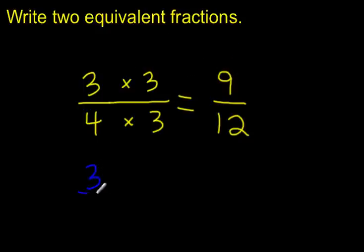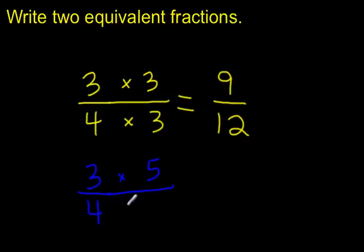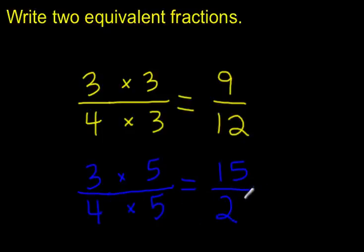Maybe I'll write another equivalent fraction for 3 fourths. This time I want 5 times as many parts, and the parts would be 5 times as small also. So I'll multiply my numerator and my denominator by 5. So 3 times 5 gives me 15 parts shaded, and 4 times 5 gives me 20 parts in the whole. The parts are 5 times as small as the fourths I started with. But as long as you use the same multiplication relationship with the numerator and denominator, you'll have an equivalent fraction.